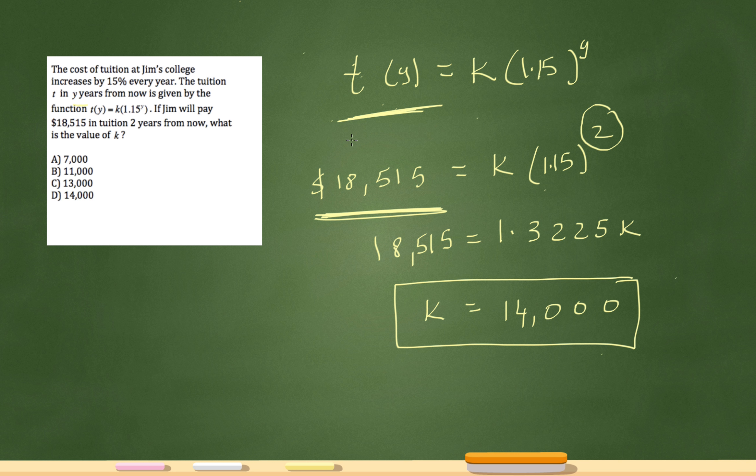And then it just became an algebra problem right here, and I solved for my k. 1.15 squared was this number, so it's 1.3225k equals 18,515, and then divide both sides by 1.3225, and you're left with k equals 13,997, which rounds to 14,000.